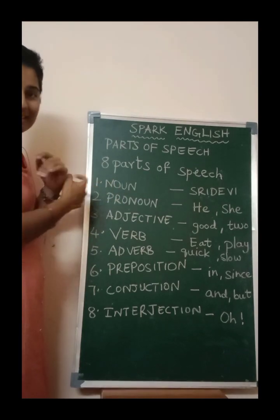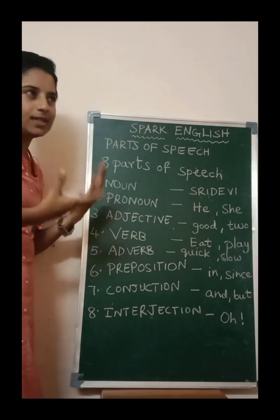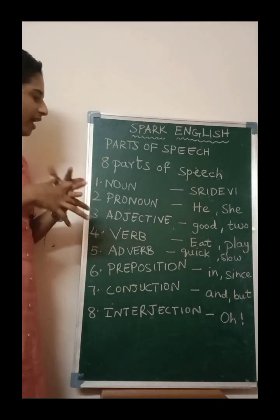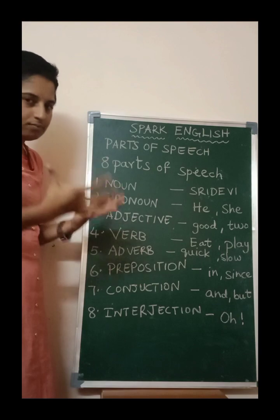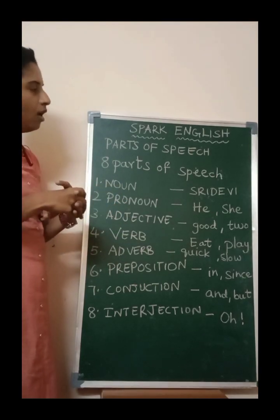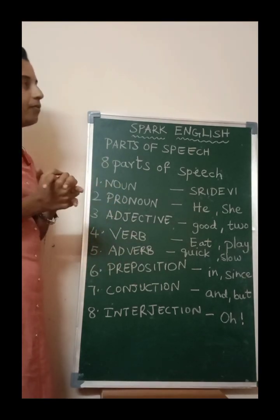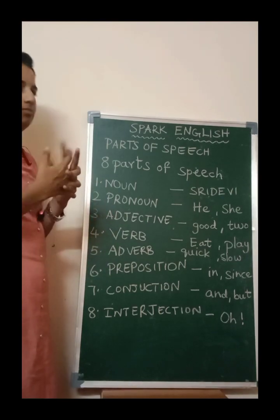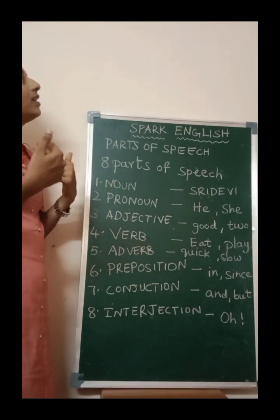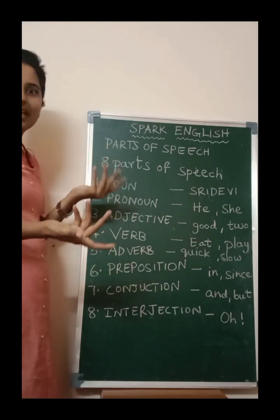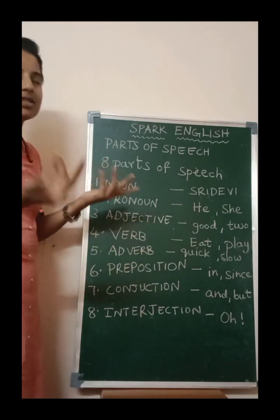The first one is noun. Noun is the name of a person, place, thing — anything that is a name is a noun. For example, myself Shri Devi — Shri Devi is a noun because it is my name. I suppose I live in Delhi — Delhi is a noun. I live in Bangalore — Bangalore is a noun.